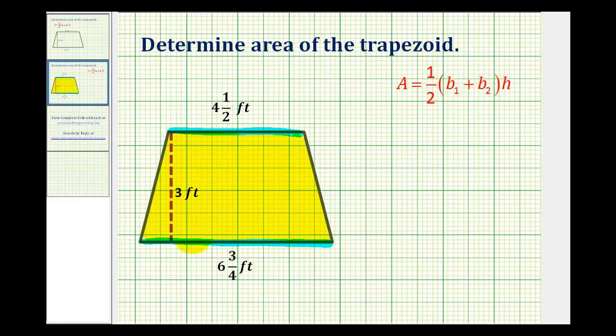So looking at our trapezoid, let's let the length of base one equal six and three fourths feet. And let's let the length of base two equal four and one half feet.